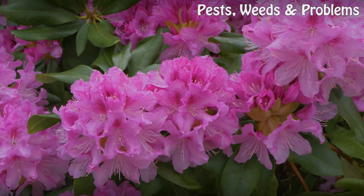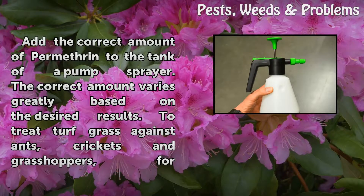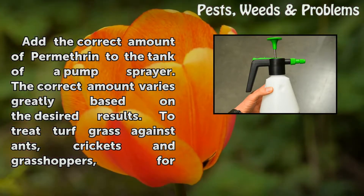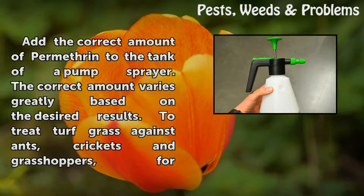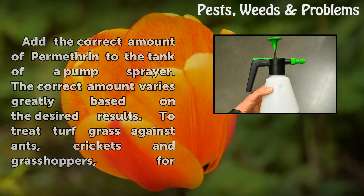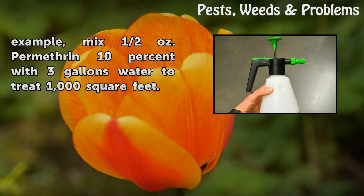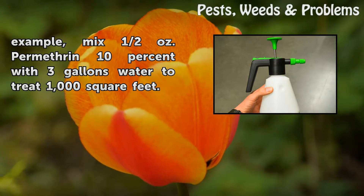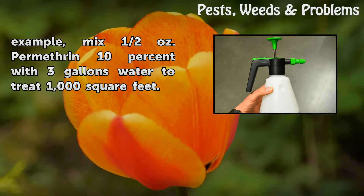Step 1: Add the correct amount of Permethrin to the tank of a pump sprayer. The correct amount varies greatly based on the desired results. To treat turf grass against ants, crickets and grasshoppers, for example, mix half an ounce of Permethrin 10% with 3 gallons of water to treat 1000 square feet.